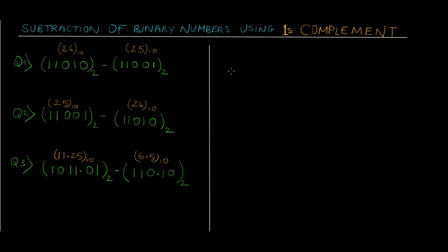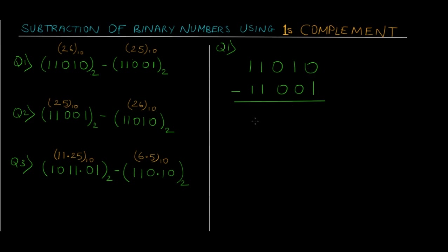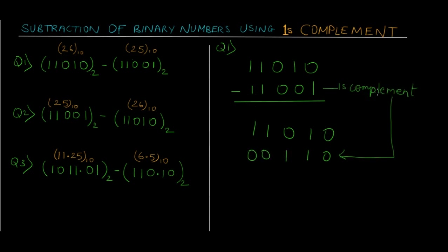For question one, we write down the first number: 11010, and we have to subtract 11001 from it. What we do is calculate the ones complement of the second number and then perform addition instead of subtraction. So the first number stays as 11010, and the ones complement of 11001 becomes 00110.